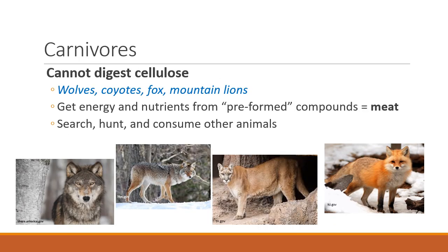Carnivores, of course, don't digest cellulose. They get their protein and everything they need by eating other animals. On rangelands, those would include wolves, coyotes, foxes, mountain lions, etc. They get their nutrients from what we call pre-formed compounds — i.e., meat. Most of their digestion is simple, but the strategy of trying to find what they eat is difficult — searching, hunting, and finding a way to consume those other animals.